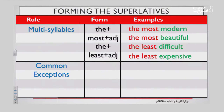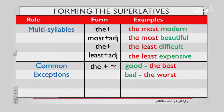The last rule is common exceptions. You write the, but there is no rule to it — the whole word changes. For example, good — the superlative is the best. Best is the superlative of good. Bad — you say the worst. More — you say the most. Little — you say the least.